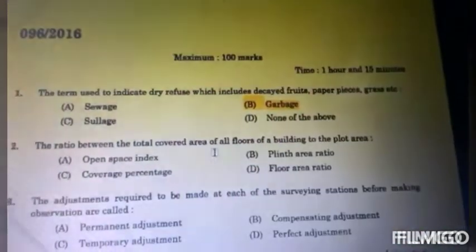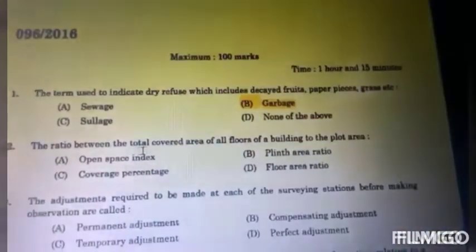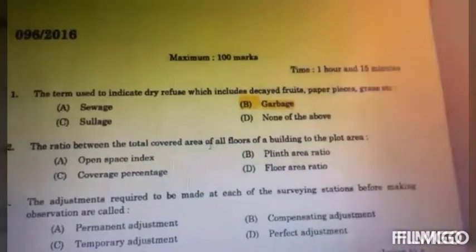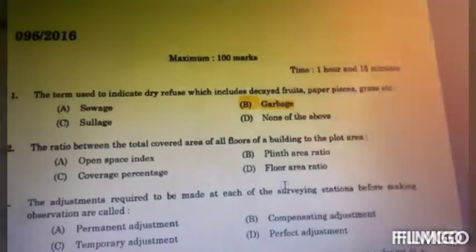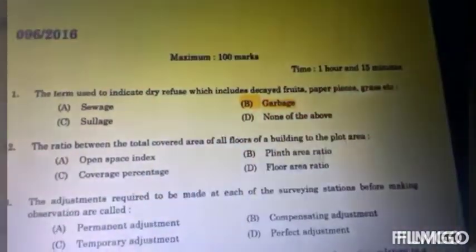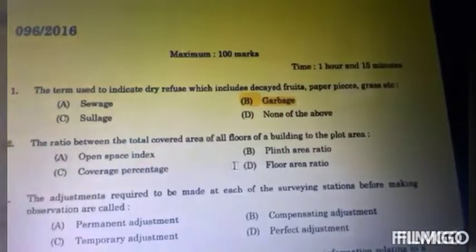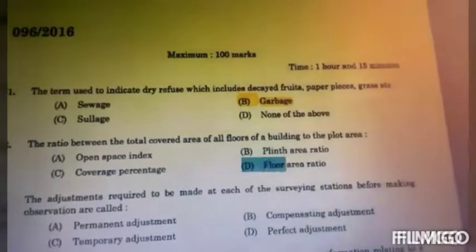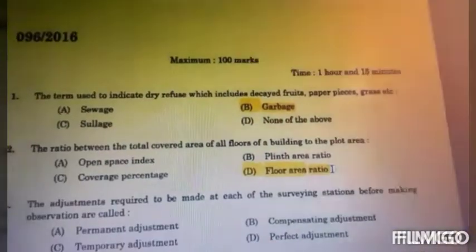Our question asks for the ratio between total covered area of all floors of a building to the plot area. So the answer is Option D, Floor Area Ratio.